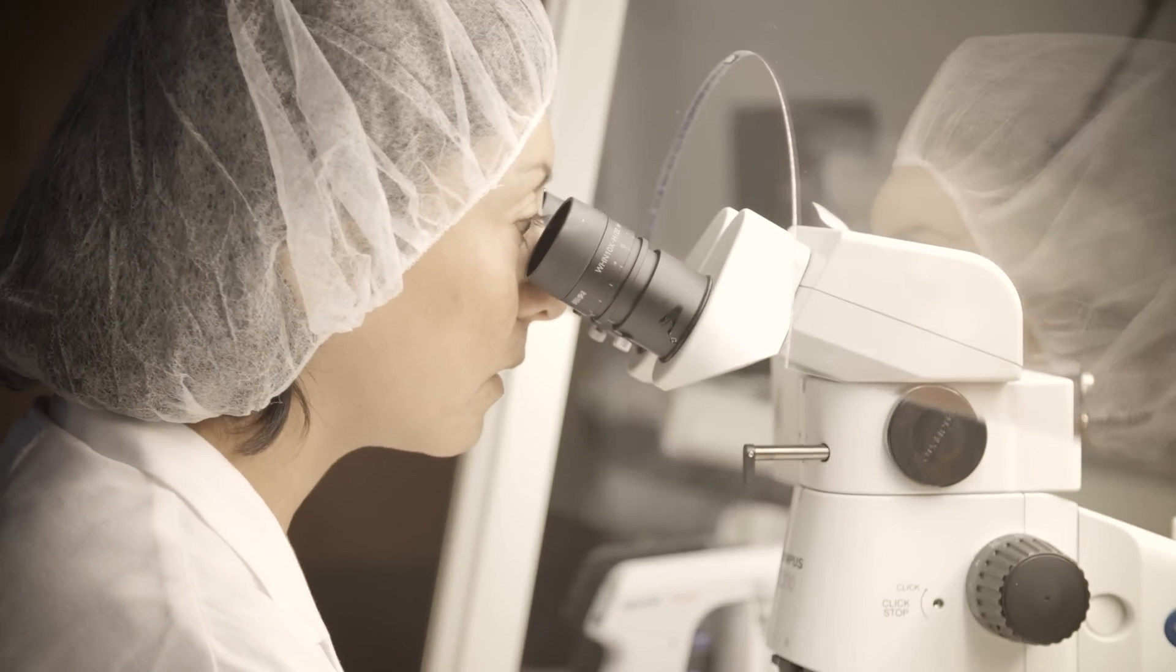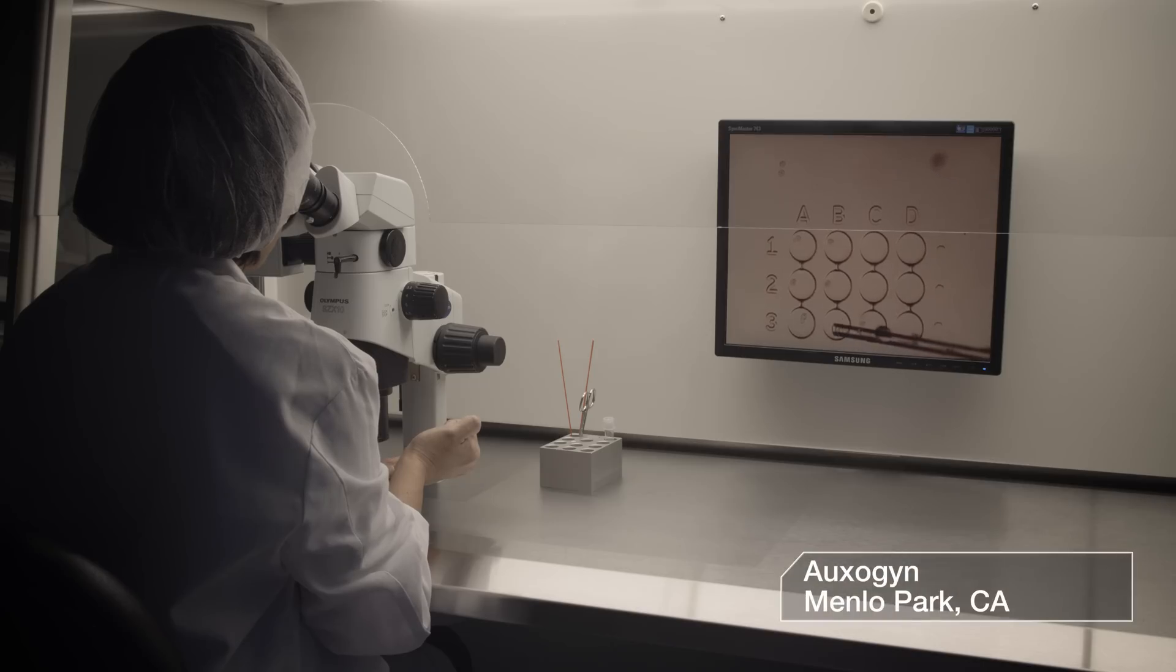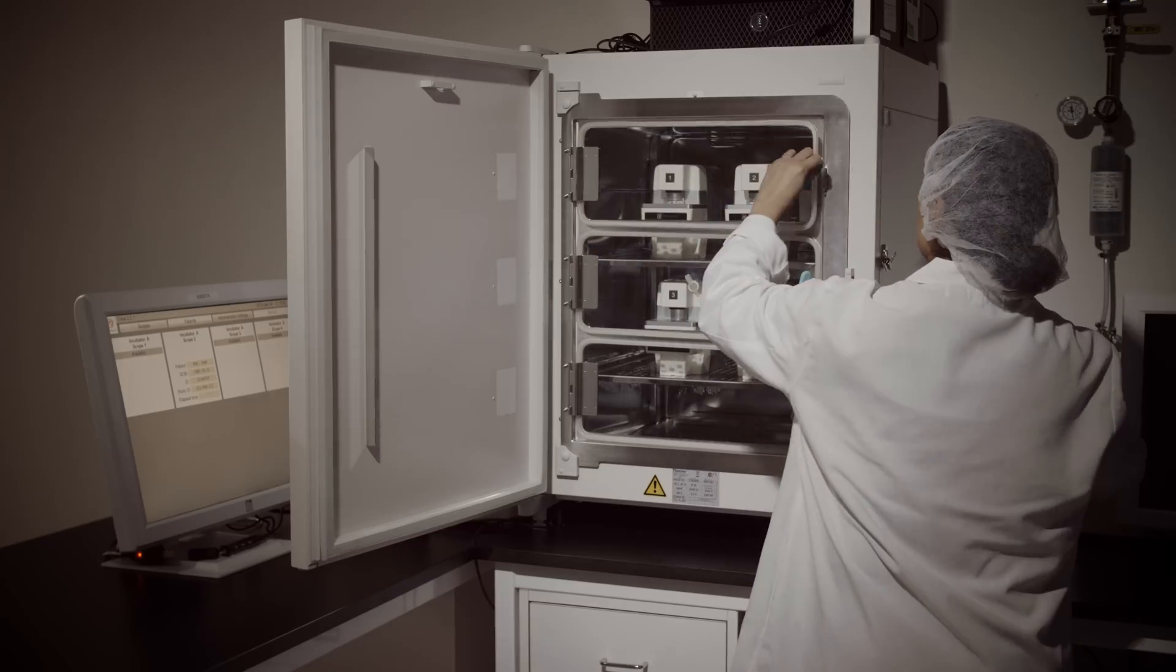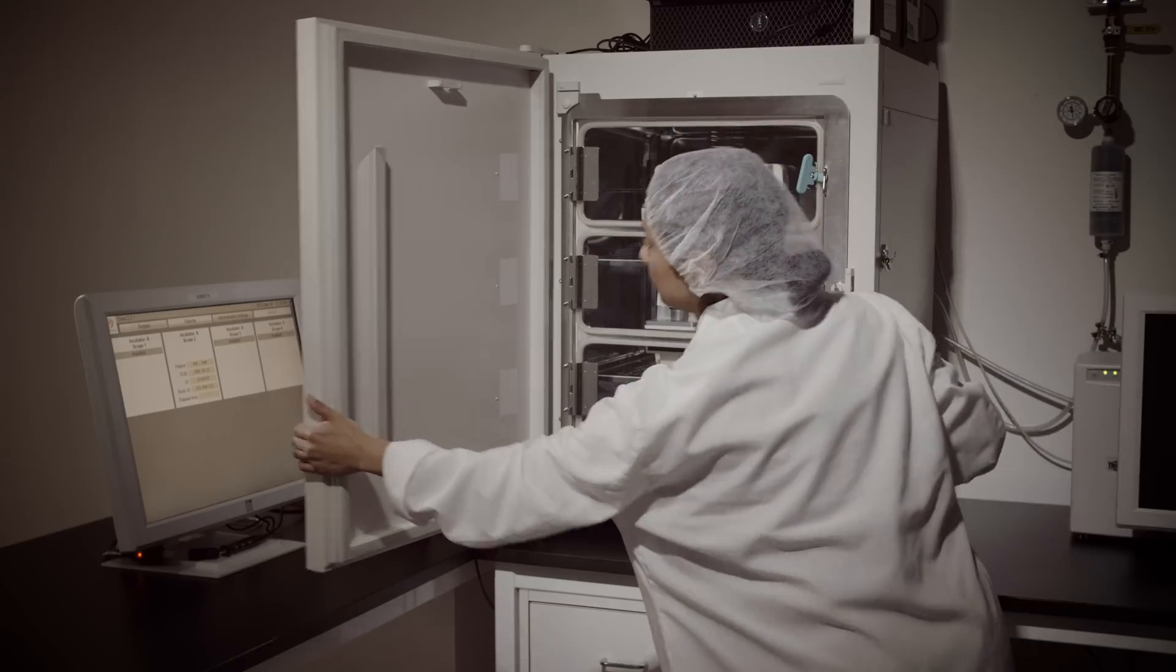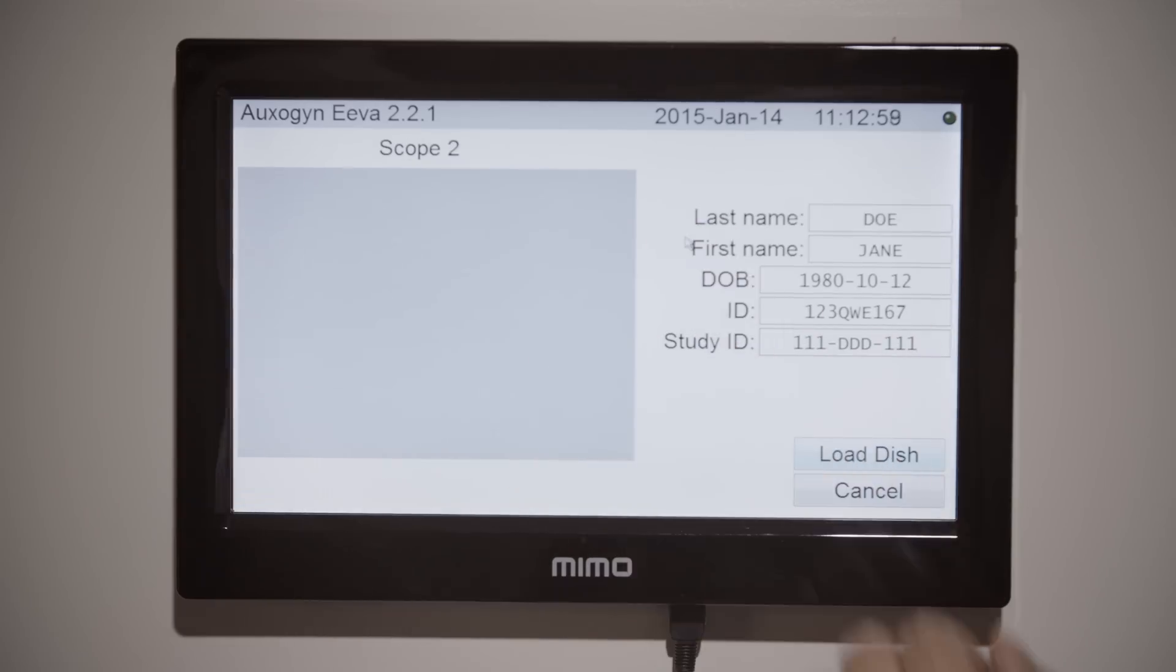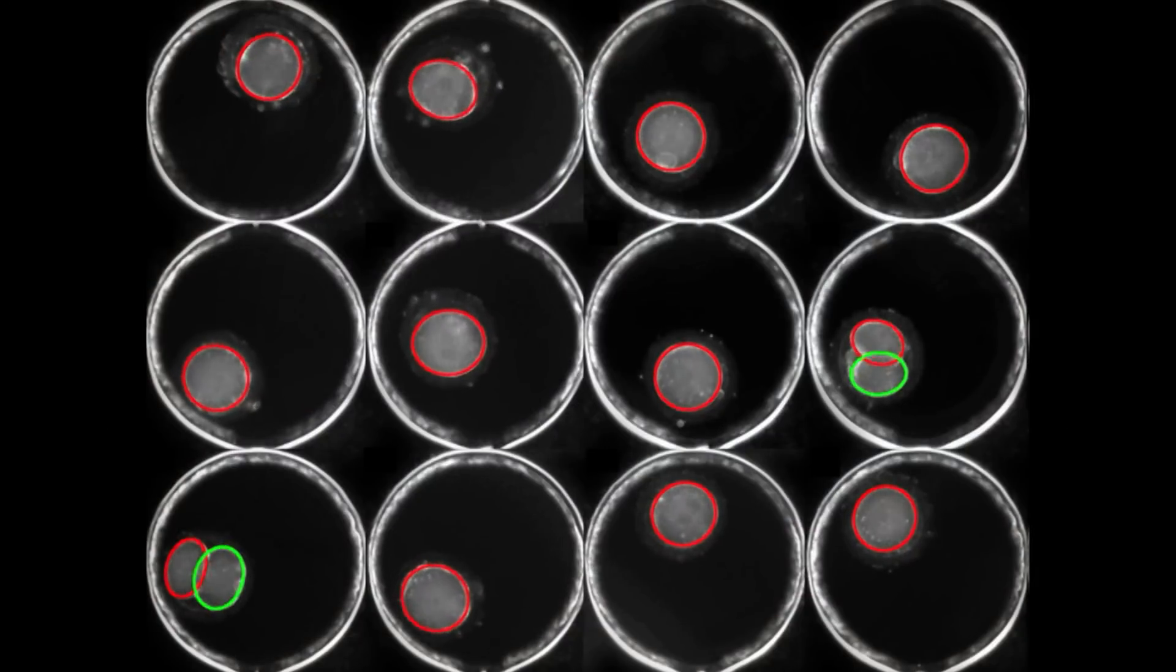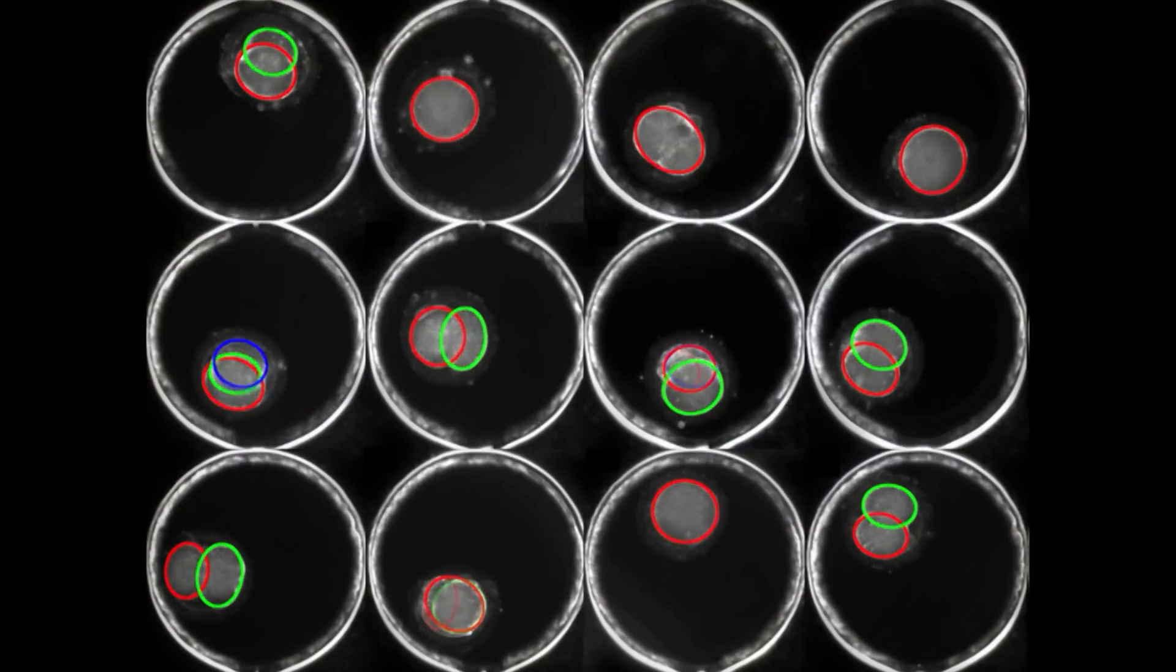A company in Menlo Park wants to make that possible. They film the embryos with a tiny camera inside the incubator. A computer algorithm automatically tracks the development of each embryo. A new ring means the computer has picked up on a new cell division.